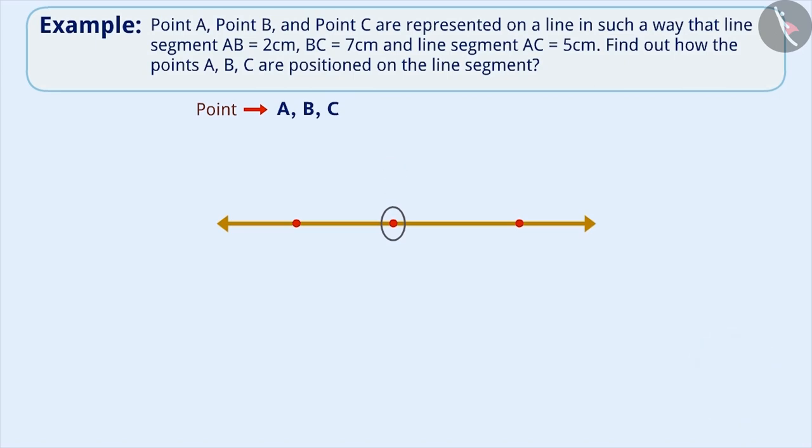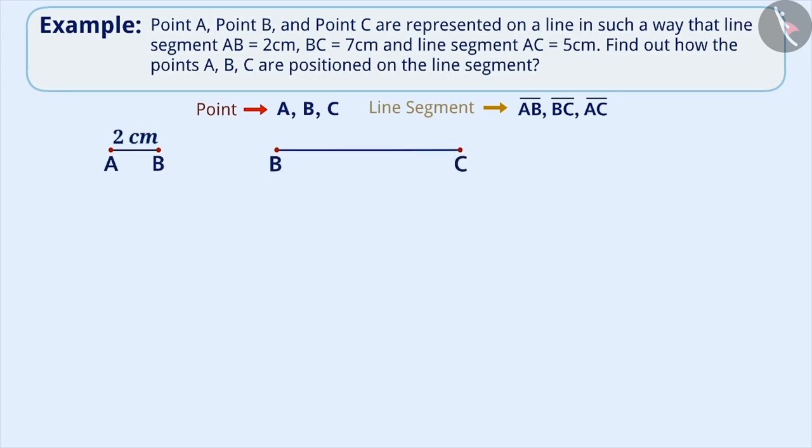Let me tell you. One way to find out is to first divide the line segments separately. This is a line segment AB whose length is 2 cm. Similarly, this is BC and this is AC whose length is 7 cm and 5 cm respectively.